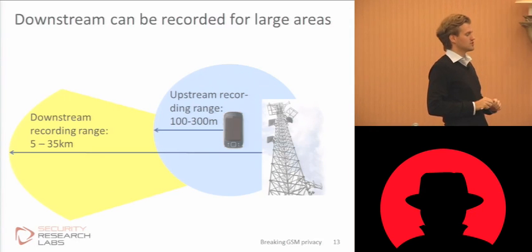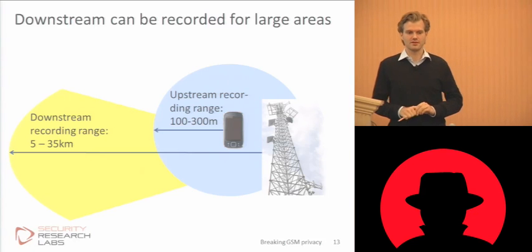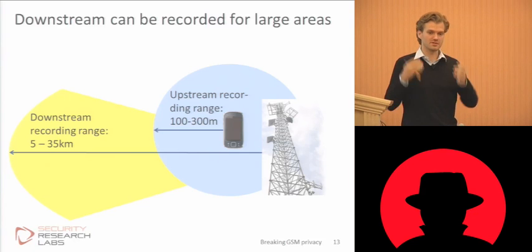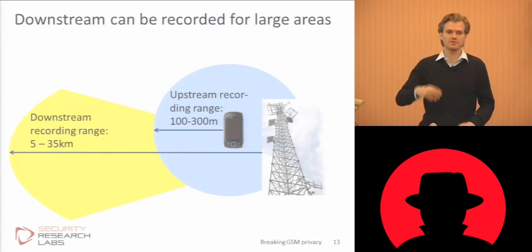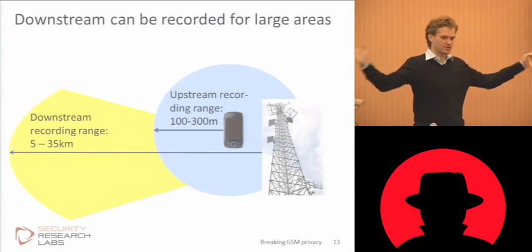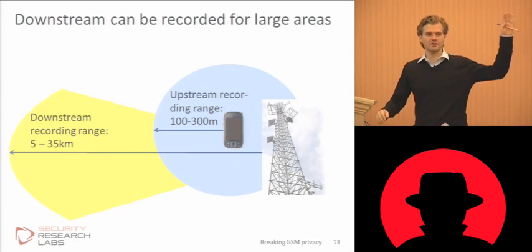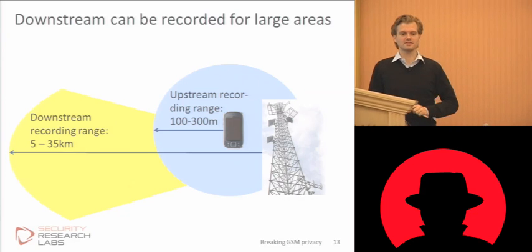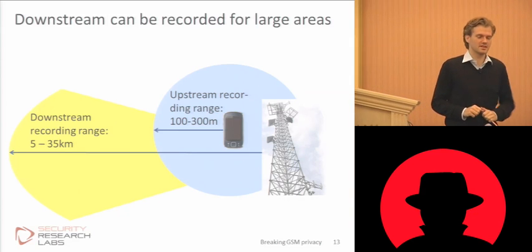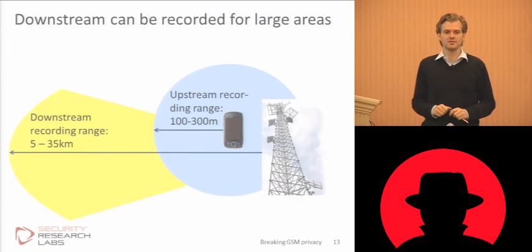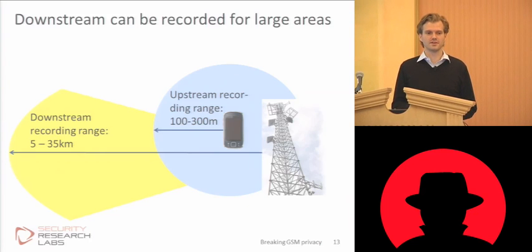This attack can be done from surprisingly far away. For simplicity, we did just replay one side of the conversation — in fact, I only recorded one side of the conversation: all the data coming down from the cell tower being sent in the general direction of the phone, but from very high up. So if you are very high up somewhere, you can hear this miles and miles away. If you're well positioned in the city, in a few central places high up, you can be intercepting one side of every GSM phone call there is in that city.